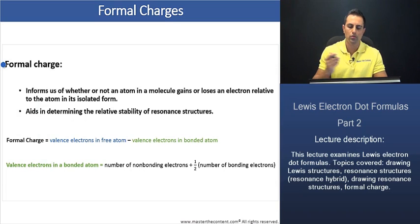First, what does the formal charge tell us? Well, the formal charge informs us of whether or not an atom in a molecule gains or loses an electron relative to the atom in its isolated form. For example, once you find the number of valence electrons in the atom in a molecule from the Lewis electron dot structure and you compare that to the isolated form of the atom, if the valence electrons are not equivalent for the two atoms, then the atom in the molecule has either gained or lost electrons and is therefore said to have a formal charge.